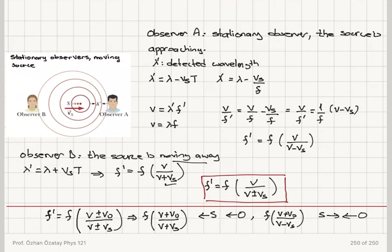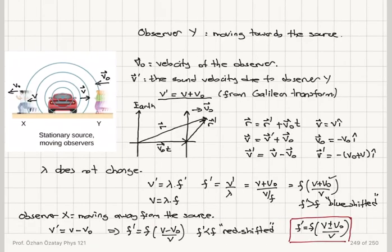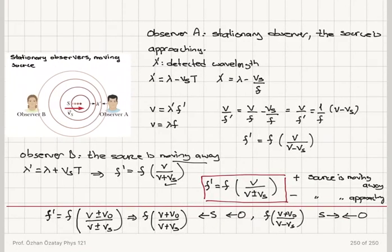If only the source is moving, we use v divided by (v plus or minus v_source): plus when the source is moving away, minus when the source is approaching. If only the observer is moving, we use (v plus or minus v_observer) divided by v: plus when the observer is approaching the source, minus when the observer is moving away from the source.